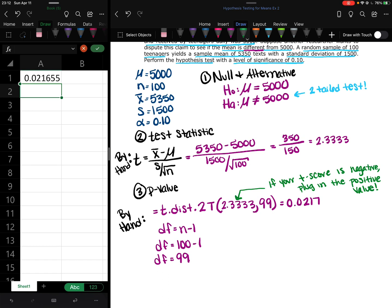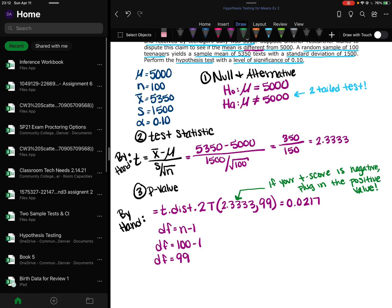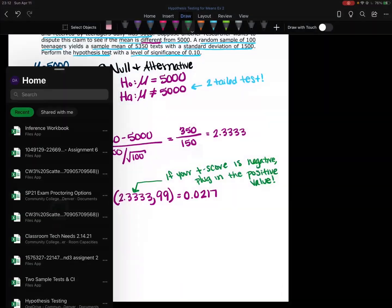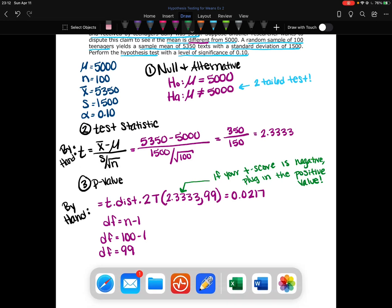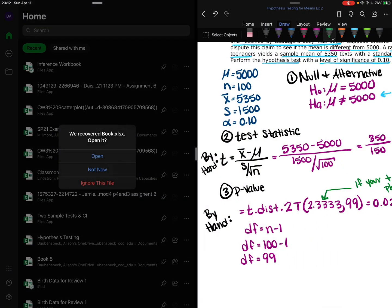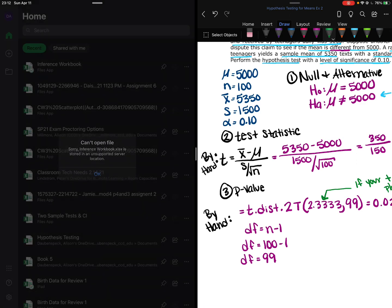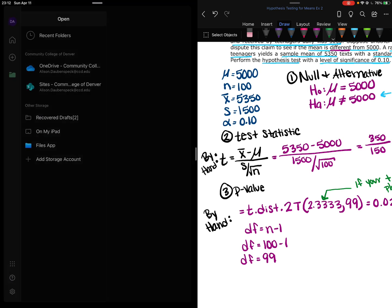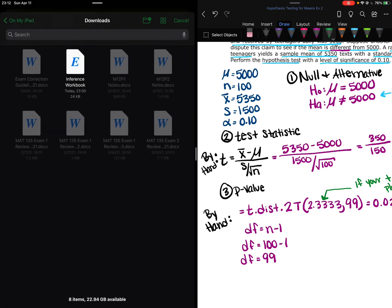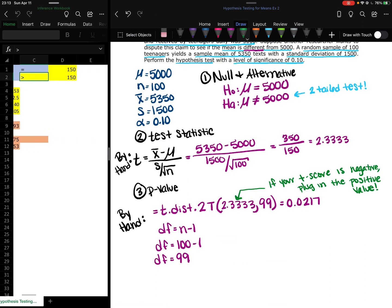So we have our test statistic and we have our p-value. So let's go in really quickly and let's just double-check that these are correct. We can check it with our inference workbook. Oh, maybe we can't. Let me try relaunching this. I don't know why it's saying it won't work. Maybe we'll be able to check this. Hang on just one second. There we go. Okay. I fixed it.